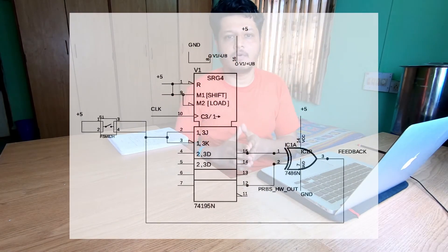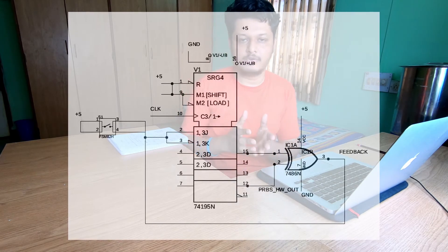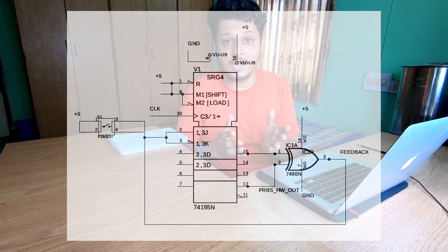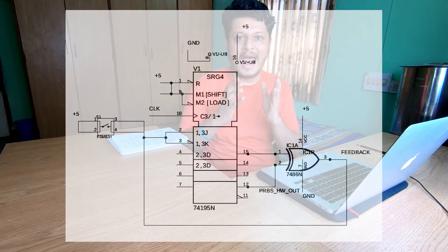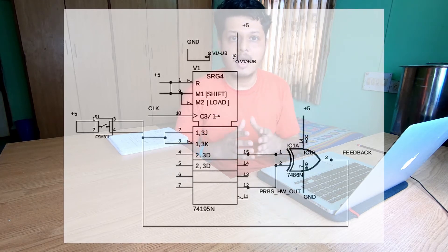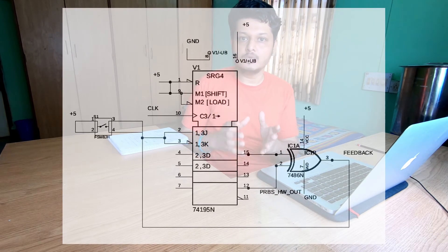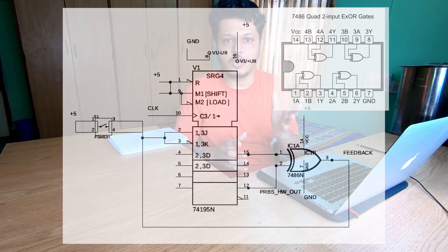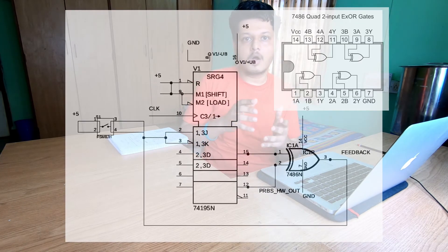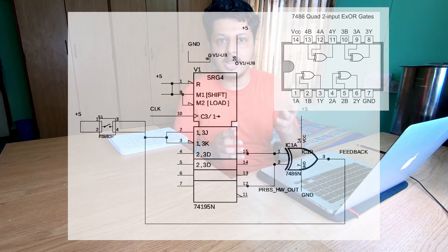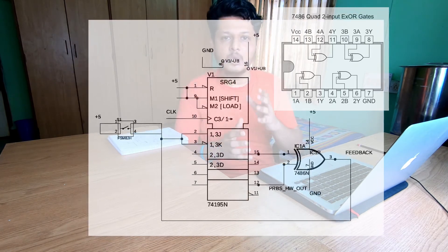This is the circuit diagram for length 15 PRBS generation based on 74195 IC. At pin number 10 we are providing external clock, and the feedback is provided using 7486 XOR gate. The input or serial in is provided at J and K input of this IC.